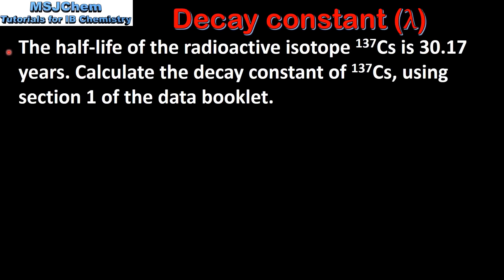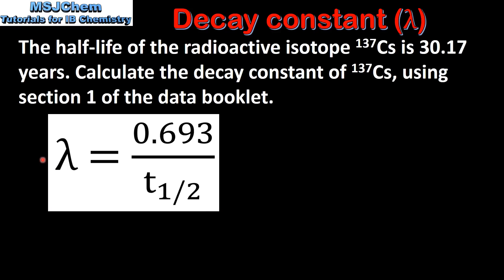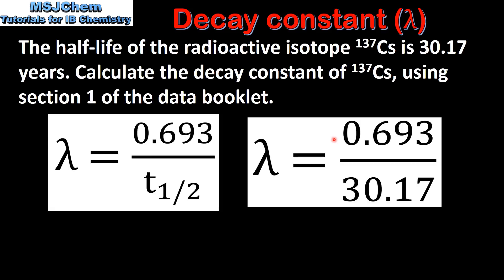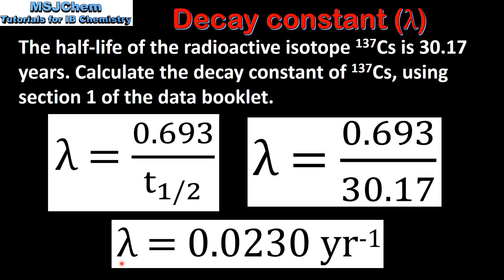Next we look at an example. The half-life of the radioactive isotope cesium-137 is 30.17 years. Calculate the decay constant of cesium-137 using section 1 of the data booklet. The decay constant is equal to 0.693 divided by the half-life, giving us 0.693 divided by 30.17. When we do the calculation we get a value for the decay constant of 0.0230 year to the negative 1.